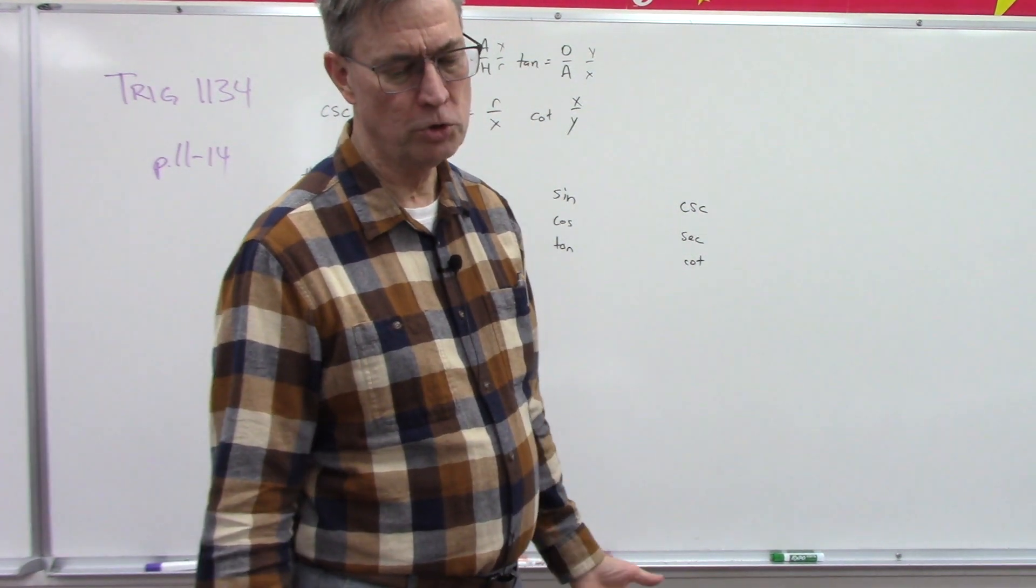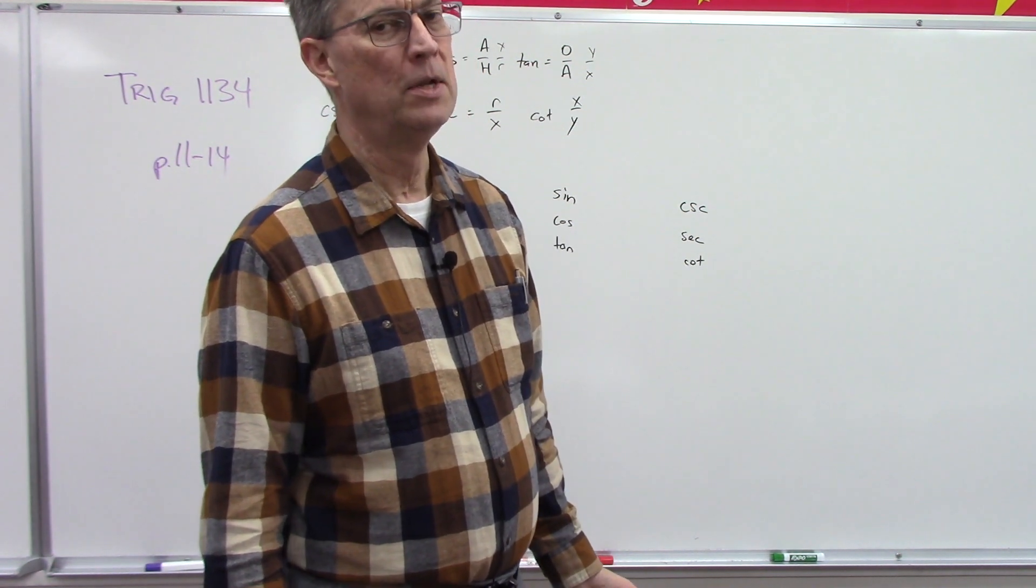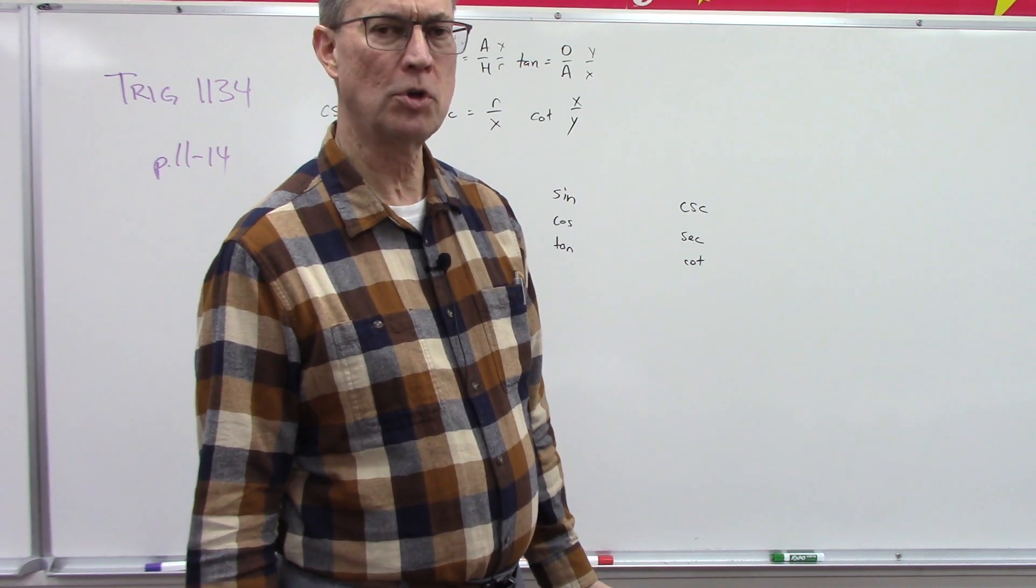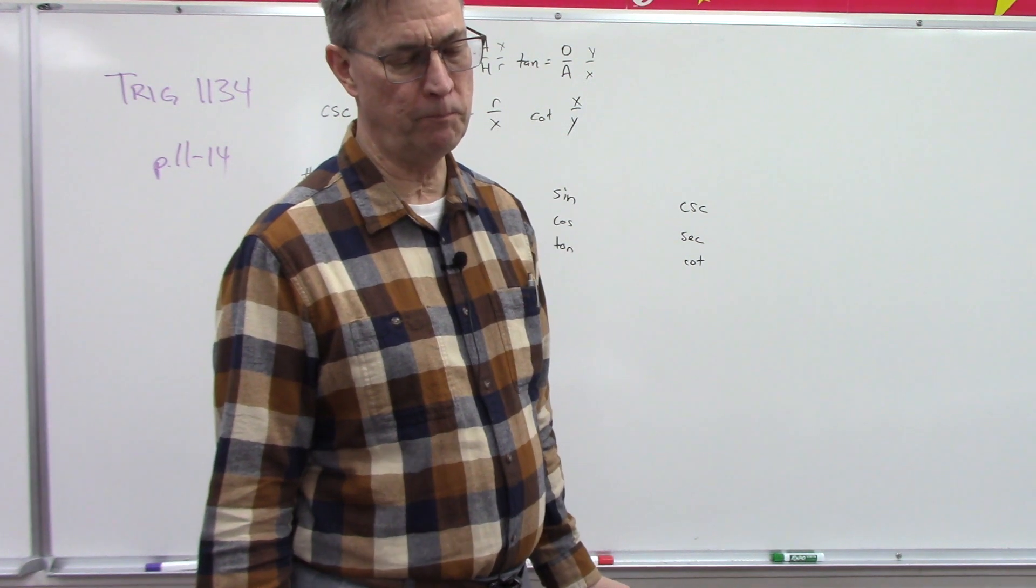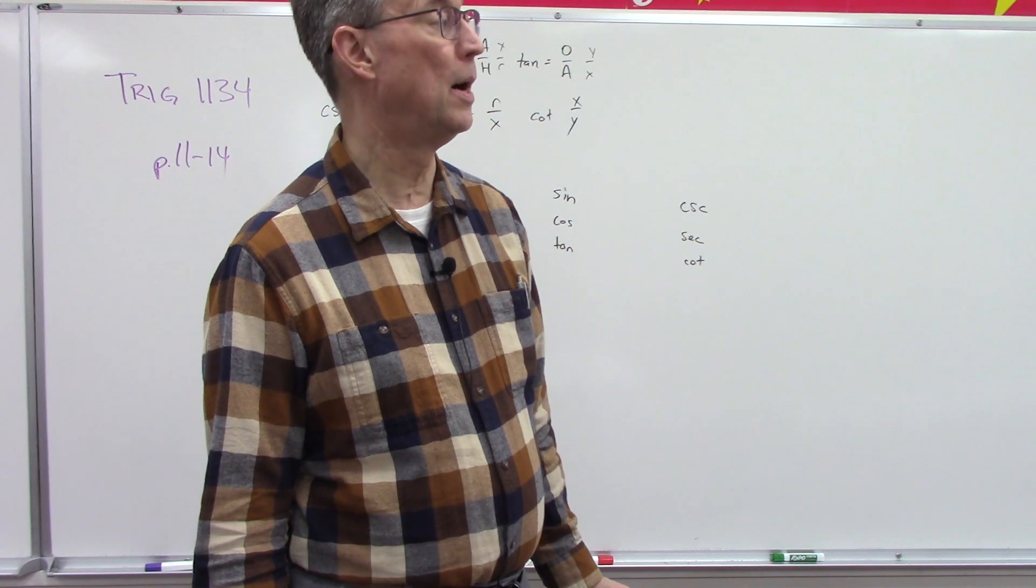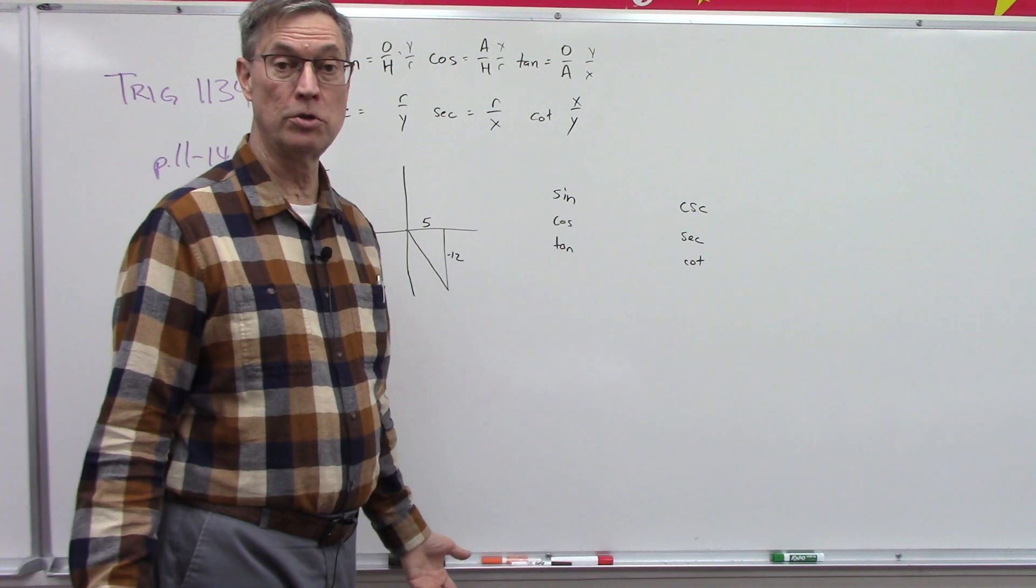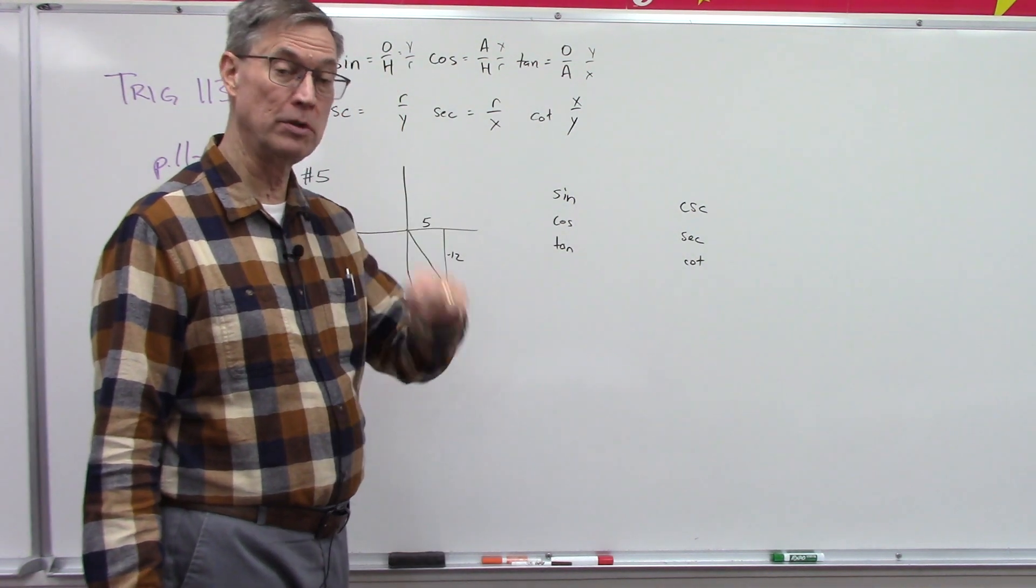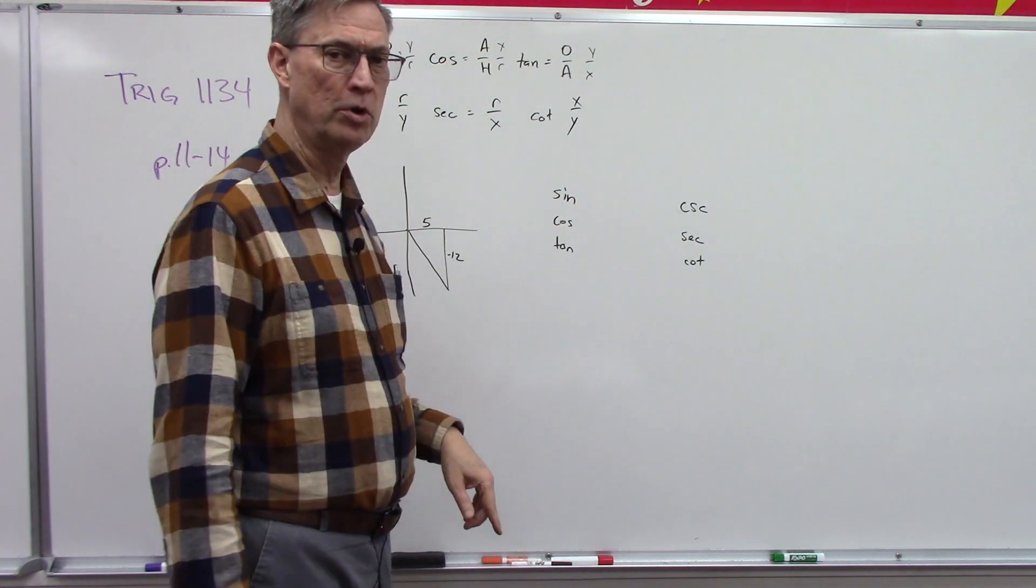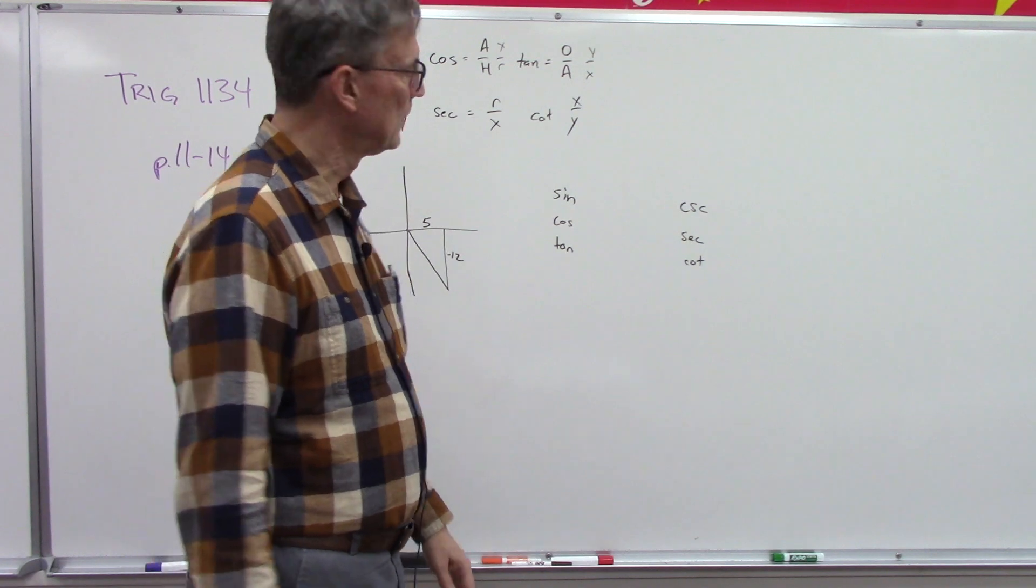Now, what they're showing us here on page 13 is they give us a point on the terminal side, so we have an x and a y value, and we're not going to have to solve for the angle. We can just find what the sine, cosine, cosecant, secant, and cotangent are just by knowing the x and the y values.